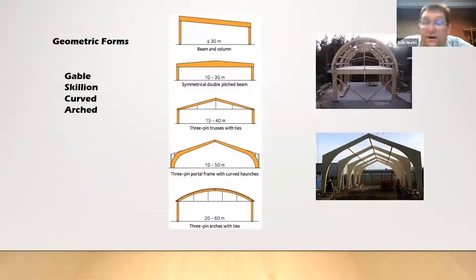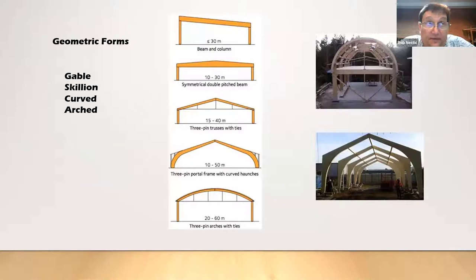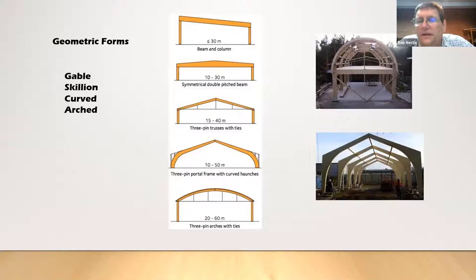Basically, portal frames can be provided as a skillion system, straight beams or a gable. We can have curved elements and a curved knee or haunch at the base to provide a connection-free section, or we can provide an arch-type structure with a collar. Within Australia we have the capability of making some of these curved elements, and there are a number of glulam suppliers who can provide that type of system. Alternatively, we can do it out of segmented sections of LVL or glulam.